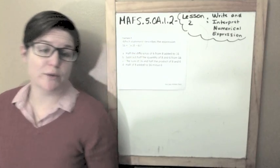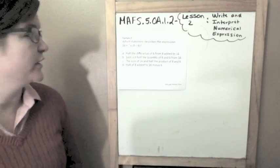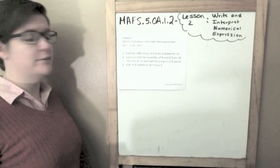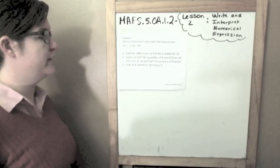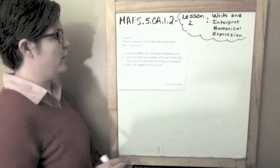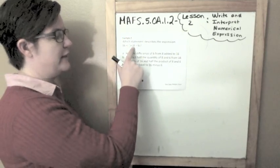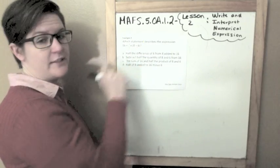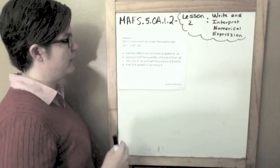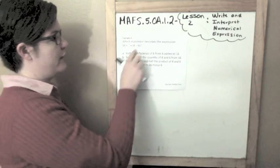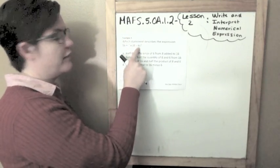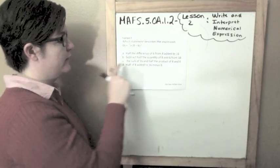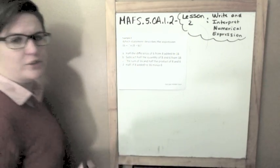Which statement describes the expression 16 plus half times 8 minus 6 in parentheses? Here I'm finding the difference, I would do this first. I'm finding the difference of 8 and 6, so 8 minus 6 would be 2. Then I'm finding half of that difference and then I'd be adding 16.